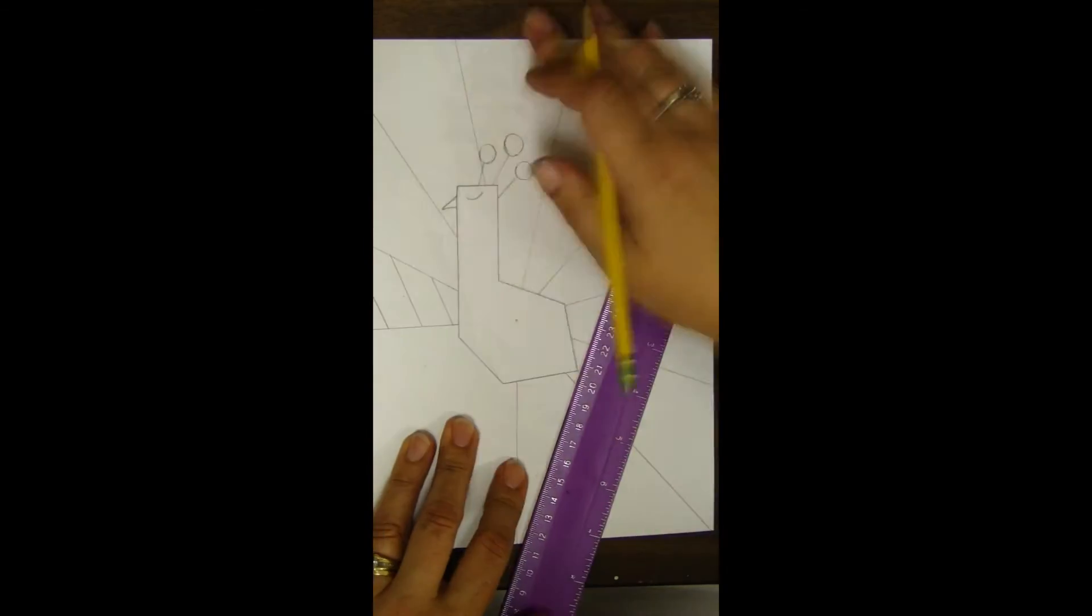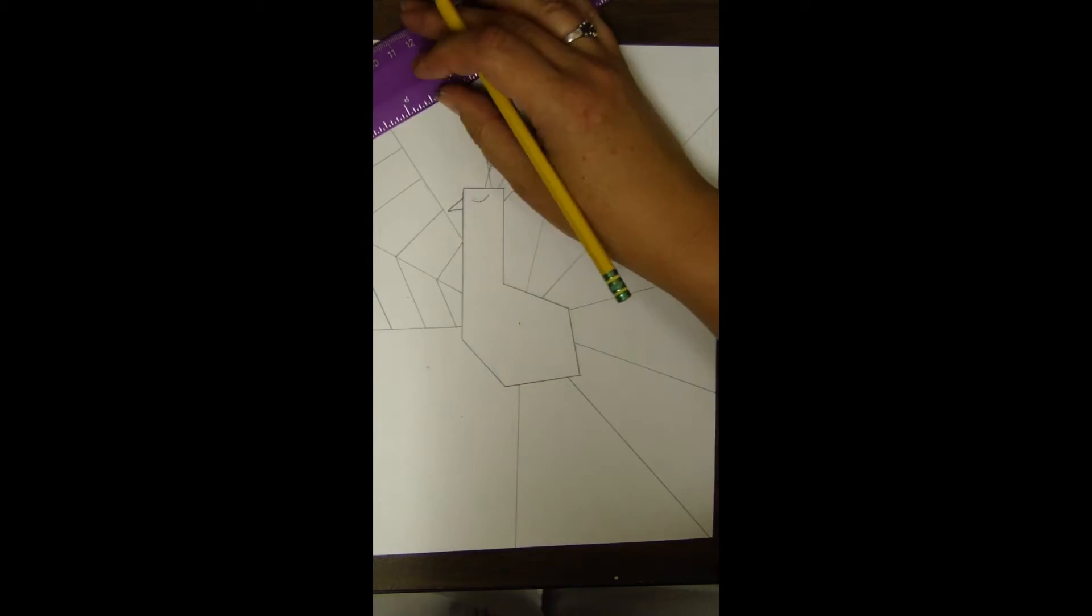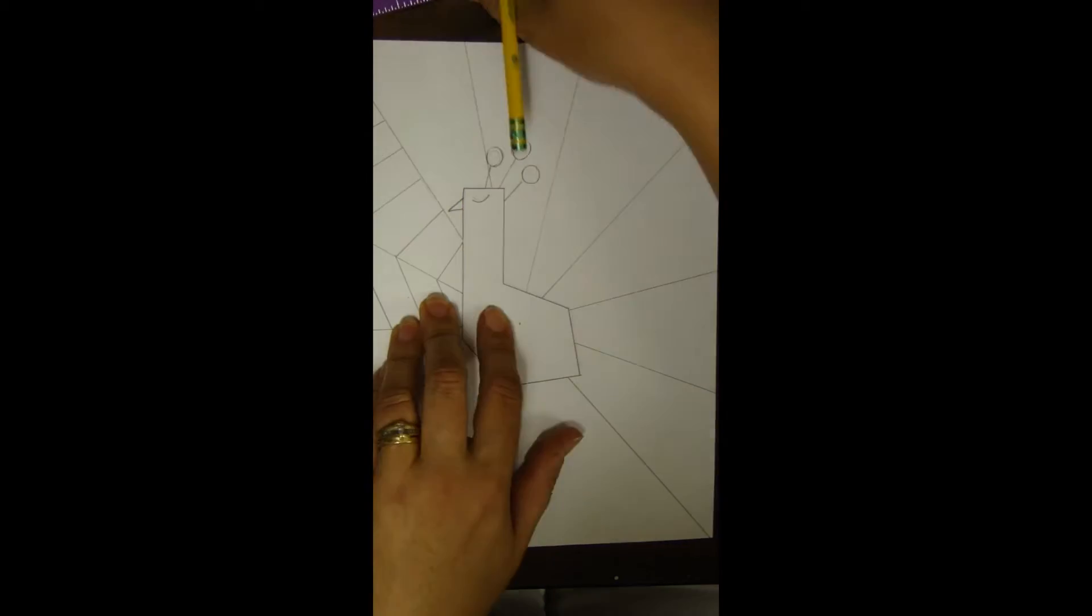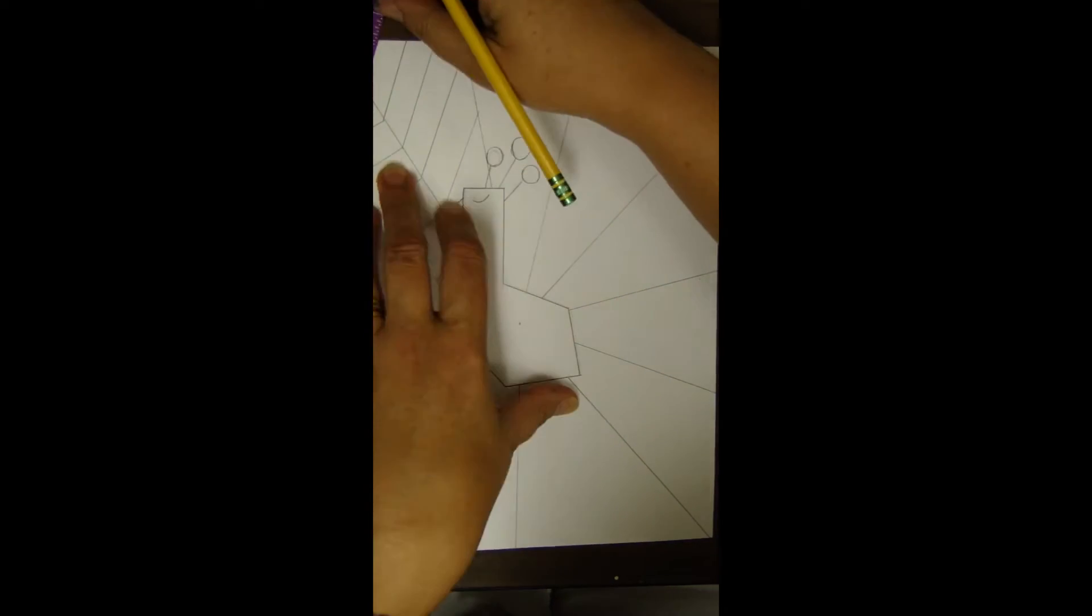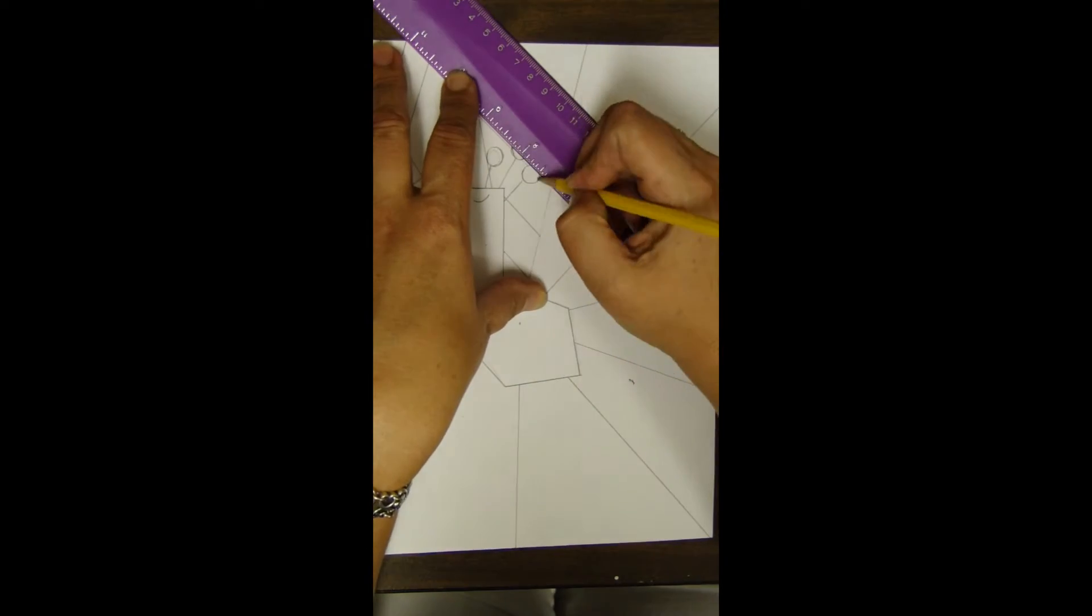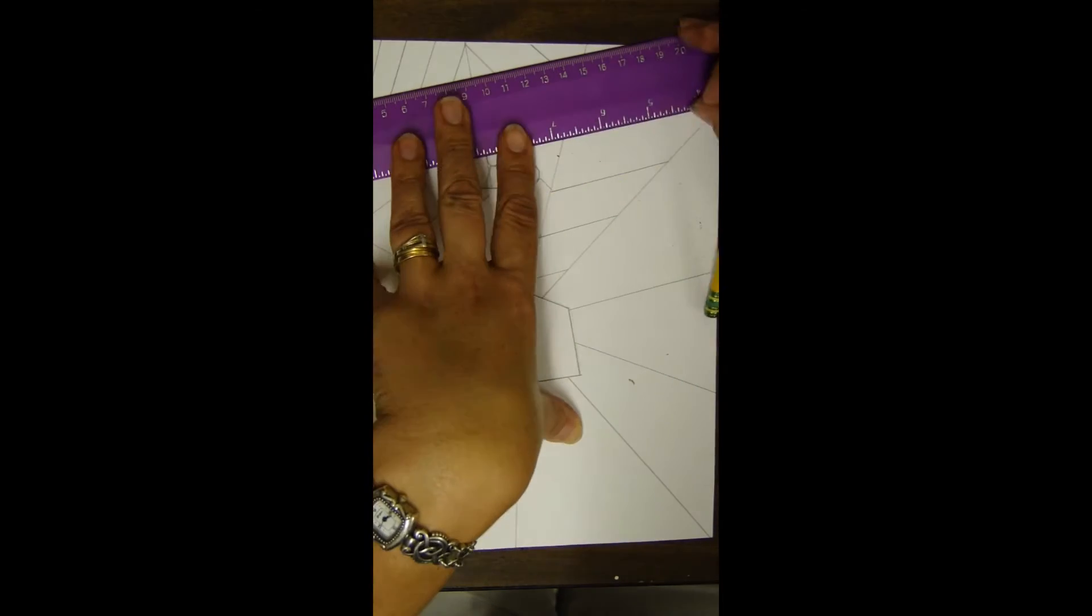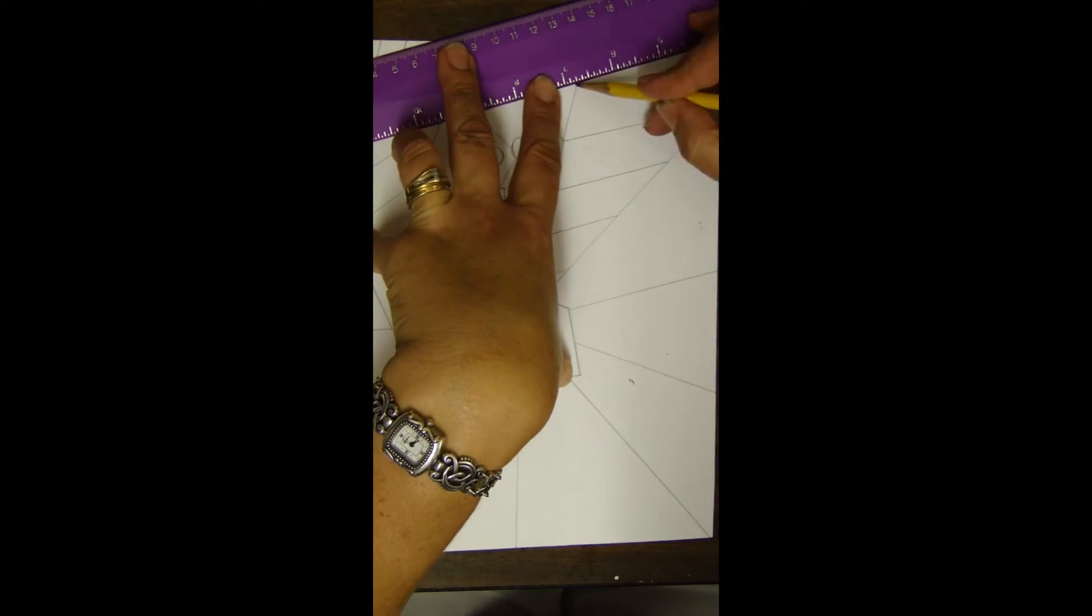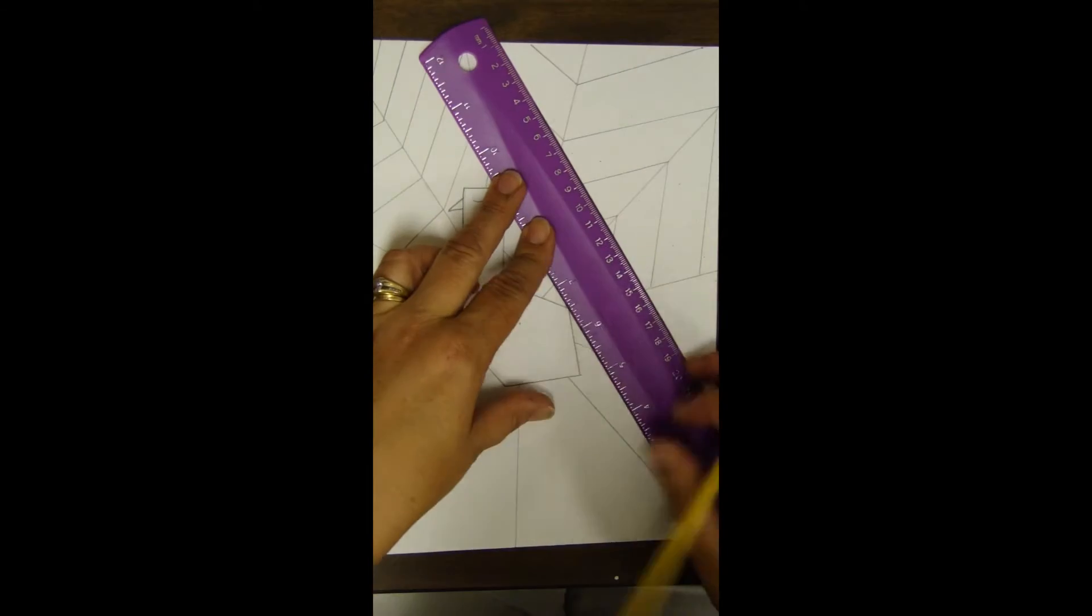All right now I'm going to go back and draw in diagonal lines to create a little detail on the feather. Notice how I'm doing them kind of in a zigzag pattern so where one feather I'll have the lines pointing down the next feather the lines will be pointing up. So they're kind of going back and forth in like a zigzag pattern.